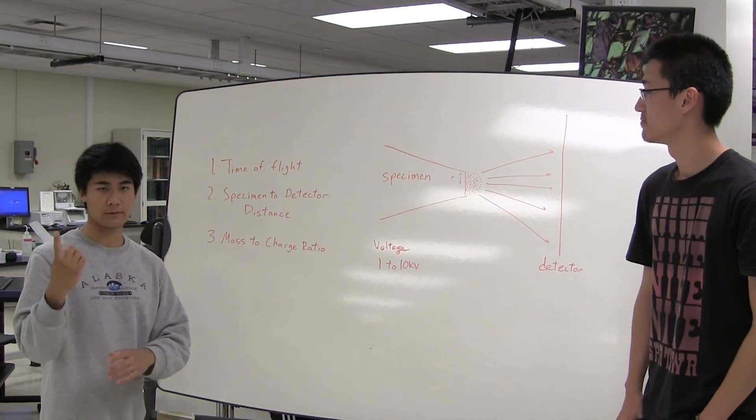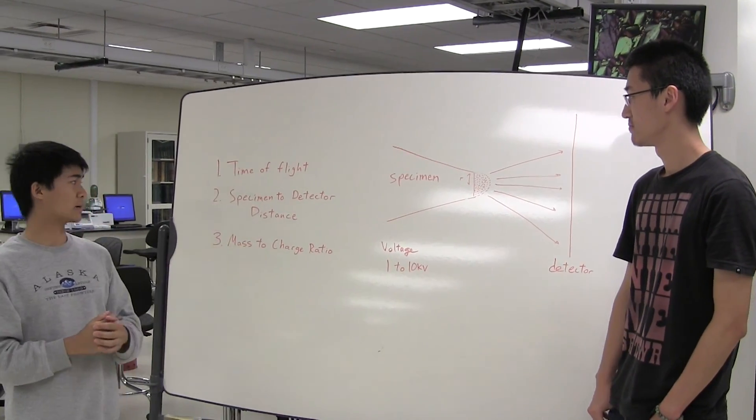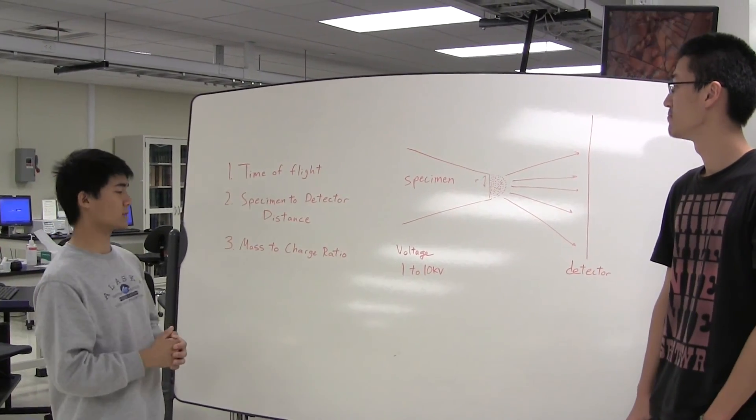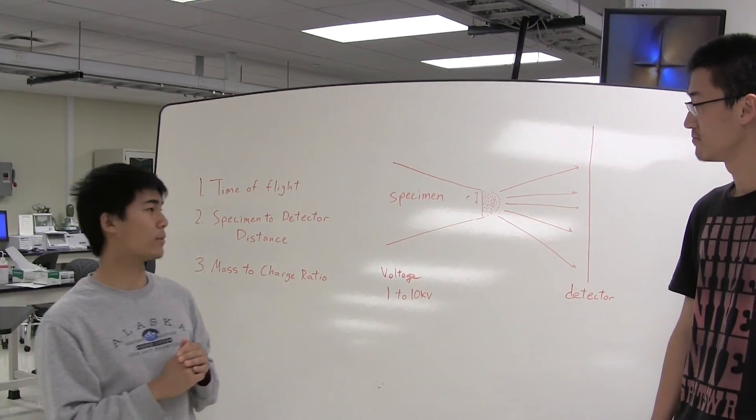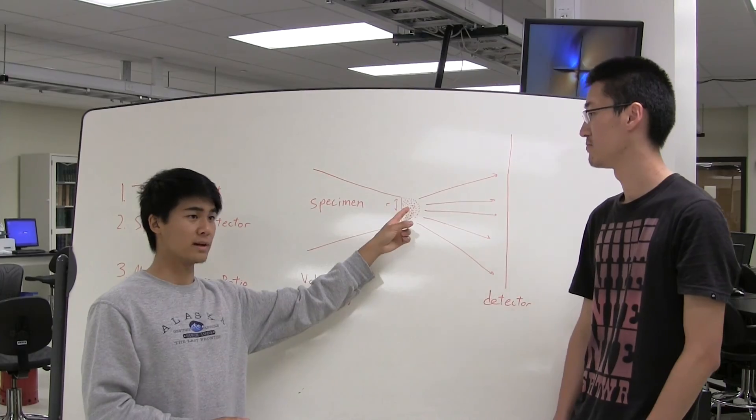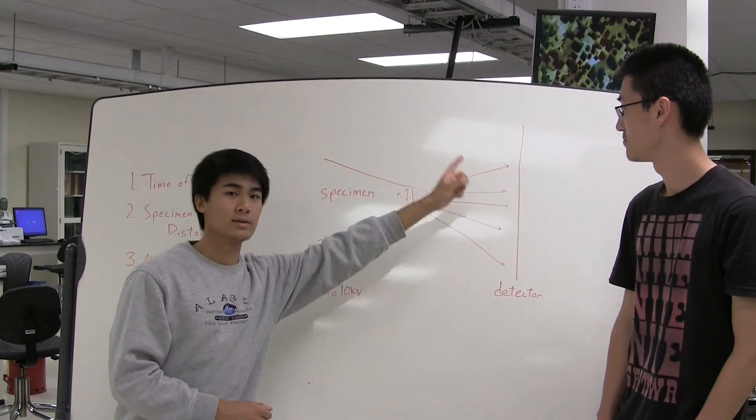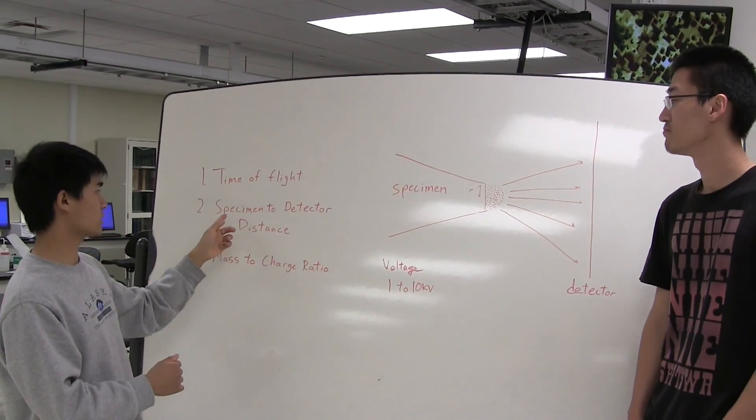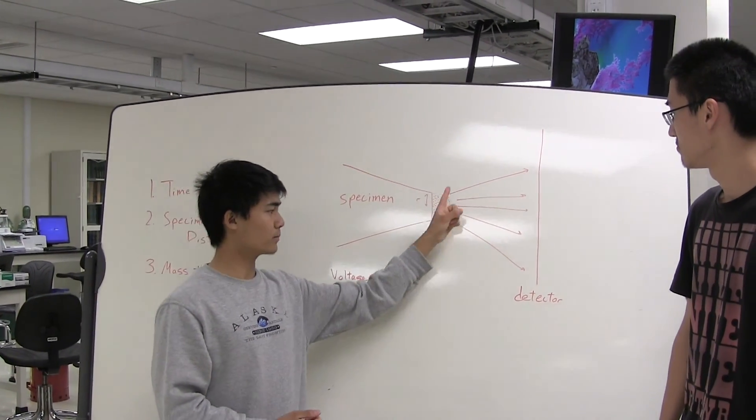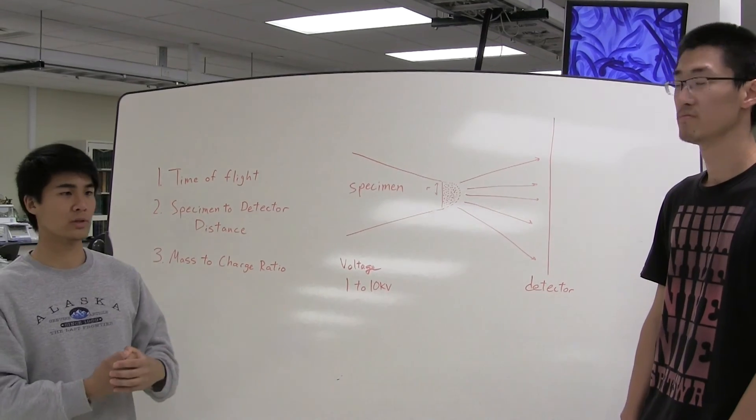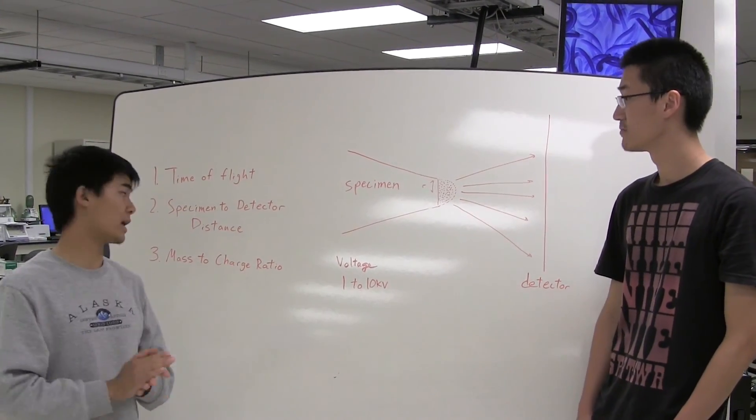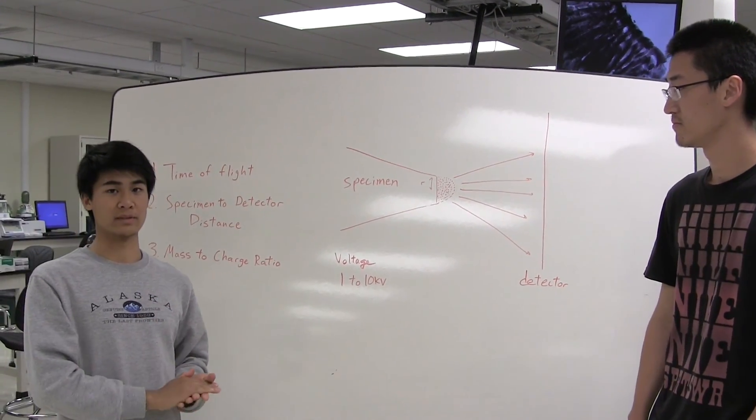So from the atom probe, we can get three pieces of information. The first one is time of flight. Second one, specimen to detector distance. And the third one is mass to charge ratio. The time of flight is simply the amount of time it takes for an ion to fly from its ionized position to the detector. The specimen to detector distance is simply the distance between the tip and the detector. And finally, the mass to charge ratio is the ratio between the mass of the specific ion being ionized and the charge that that ion possesses.